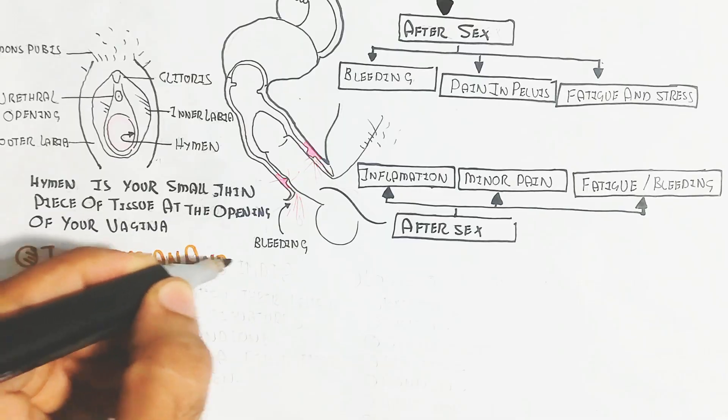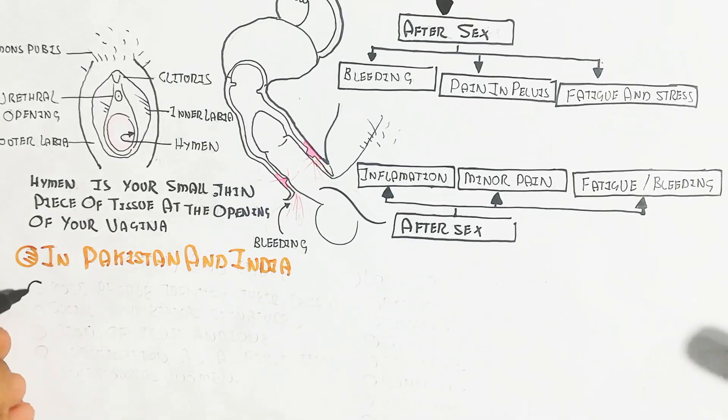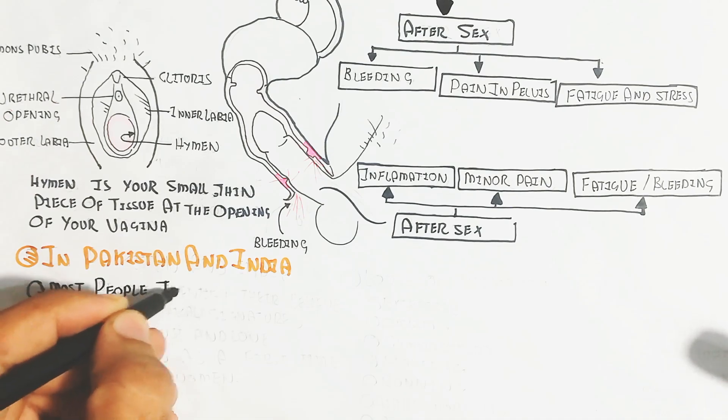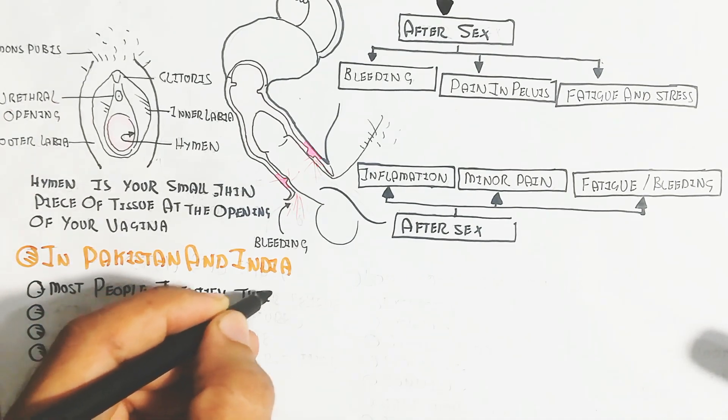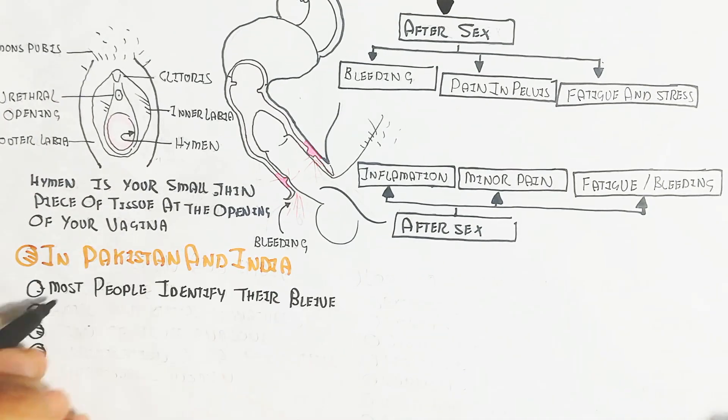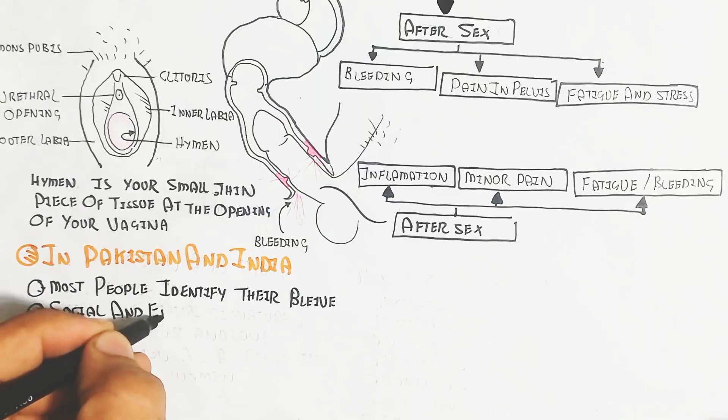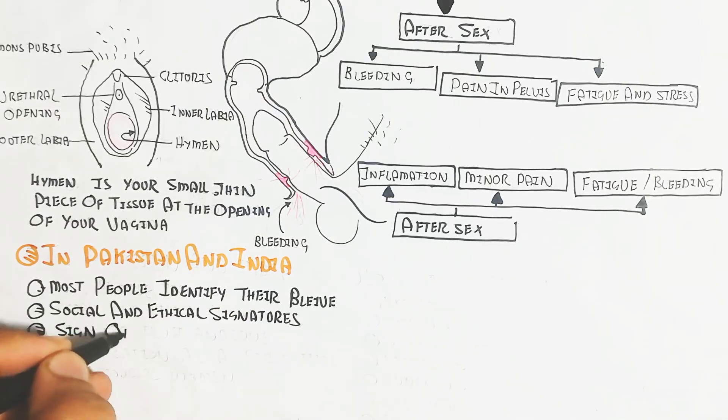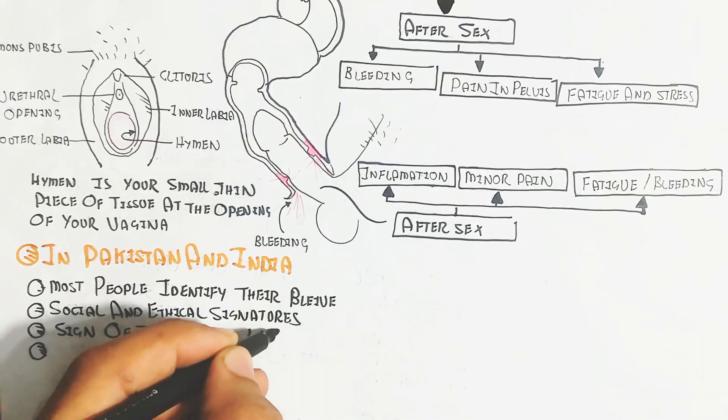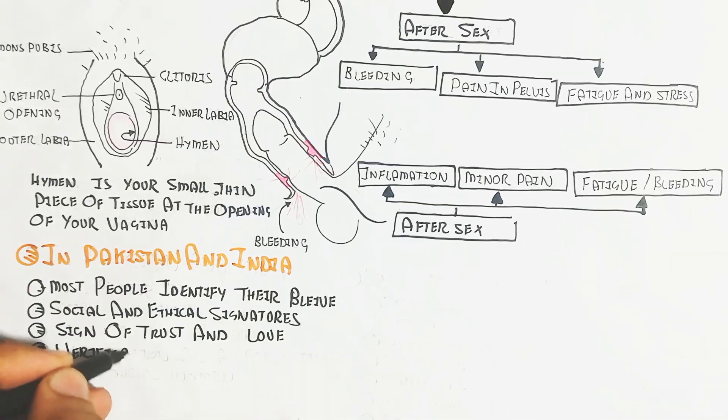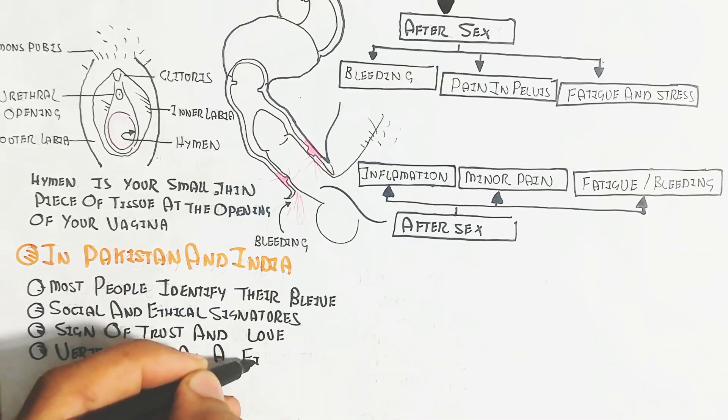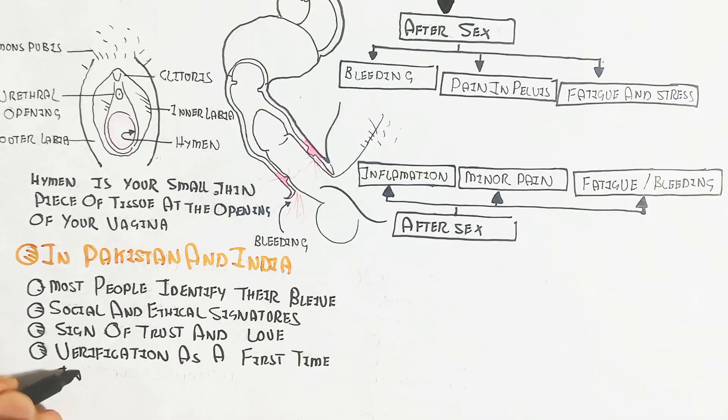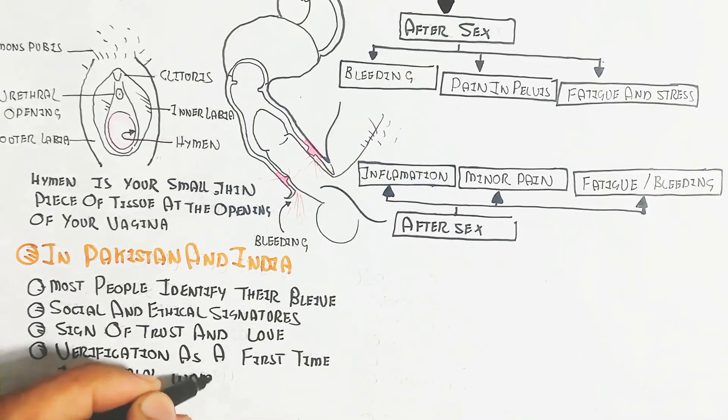In Pakistan and India, most people identify their belief by first intercourse virginity loss, and social and ethical signatures through virginity loss appearance. When bleeding occurs, it's the sign of trust and love for the female, and verification of a first-time woman.